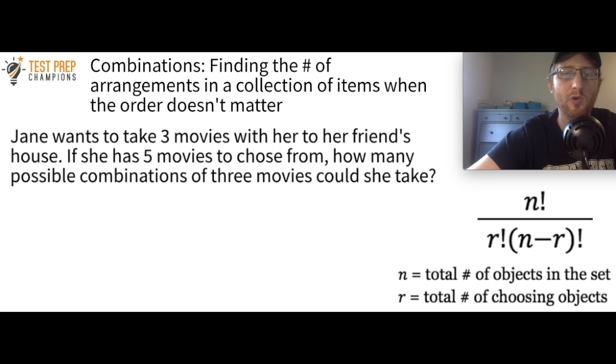Jane wants to take three movies with her to her friend's house. If she has five movies to choose from, how many possible combinations of three movies could she take? So it's up to you if you want to write them out or use the formula. But I'll let you pause the video and try to figure this out. And whenever you're ready, we'll go over the answer.